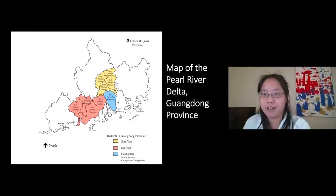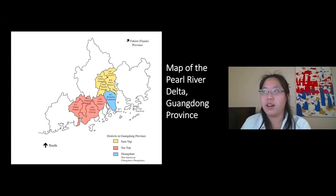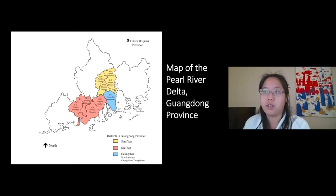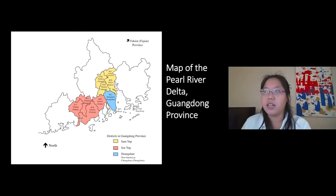Chinese immigrants started coming to the United States as early as 1785, first to the East Coast as seamen and students, but then in a much larger influx during the mid-19th century when news of the gold found at Sutter's Mill in California had spread to China, while socioeconomic conditions, political unrest, and natural disasters in southeastern China also played a role.